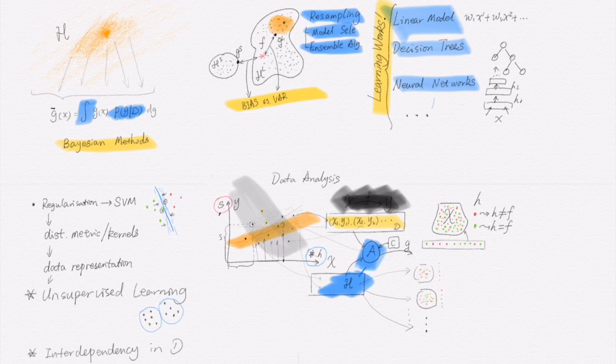We will introduce the algorithms with varying details, of course. Linear models, decision trees, neural network, ensemble methods, and some Bayesian techniques. Along the way, we will glance at the theoretical aspects of the problem. With more emphasis on the learnability. Because generalization is what ultimately matters in many practical scenarios.